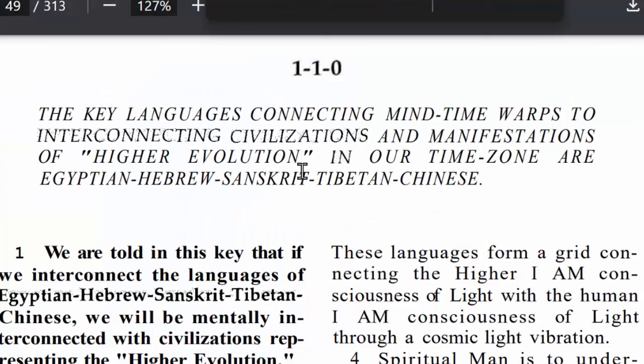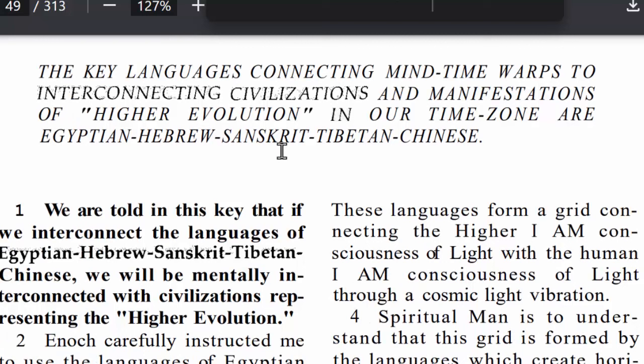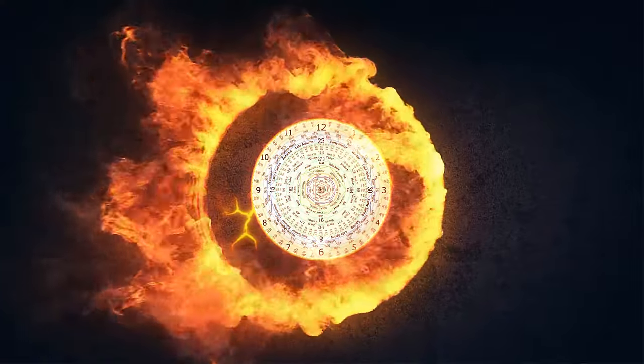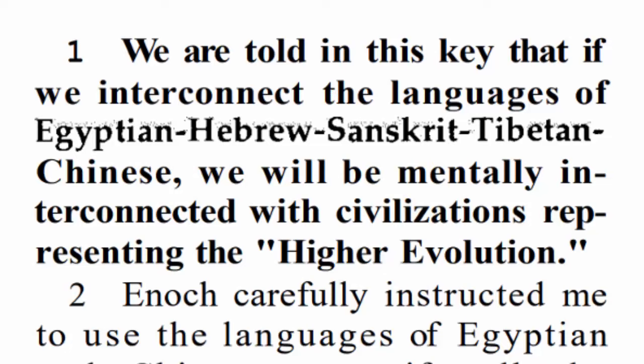Hey y'all, Coach Nafai here, and in today's class we're going to be talking about the fire letters — talking about Hebrew letters coming out of the Keys of Enoch, Key 110. The key says the key language connecting mind-time warps to interconnecting civilizations and manifestations of higher evolution in our time zone are Egyptian, Hebrew, Sanskrit, Tibetan, and Chinese. So in this class, we're going to use the text from the book and try to understand what he's talking about in these fire letters.